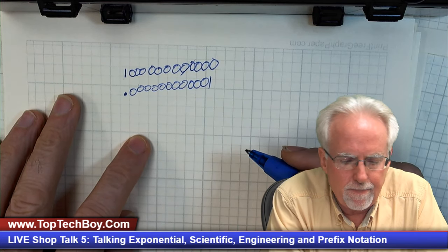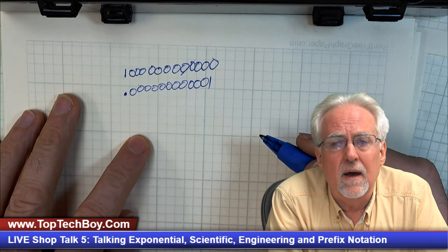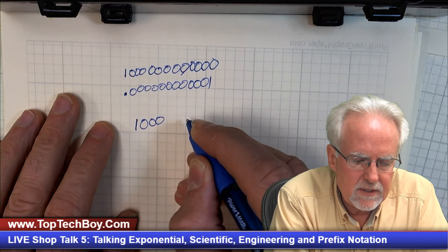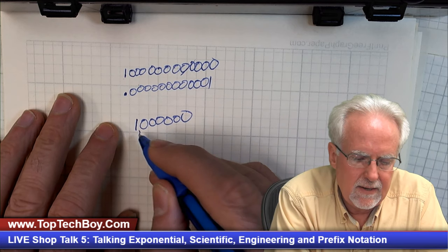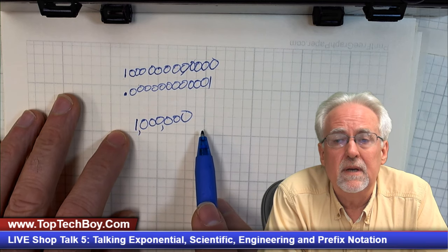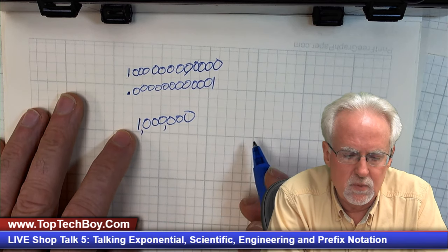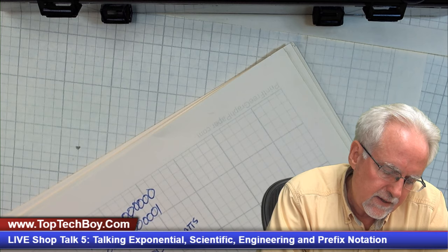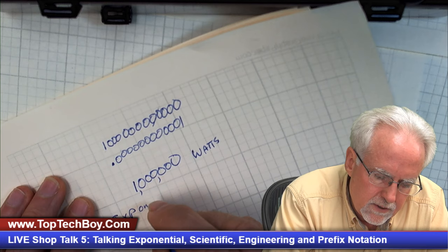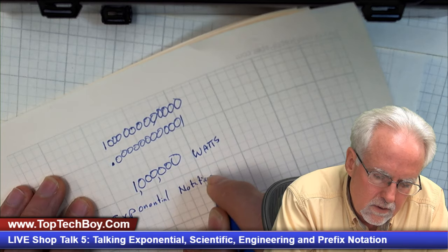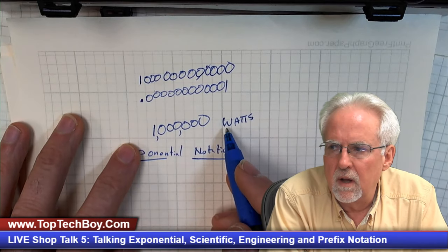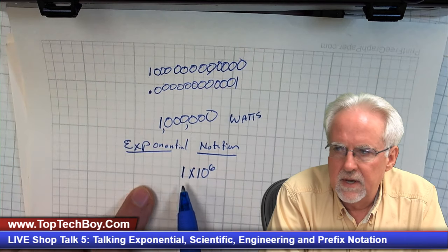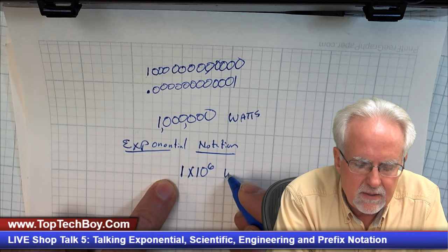So the thing that we find in the engineering world is we find ourselves having to deal with extremely large numbers and extremely small numbers, and we need a way of doing it where we're not burdened with all of these zeros. Let's say we are going one megawatt — one million watts — that would be a one and then six zeros. The first thing we are going to look at is exponential notation. You group all of those zeros together: it's one times ten raised to the sixth, and my units are still watts.